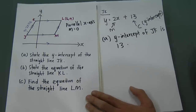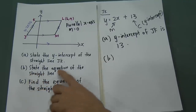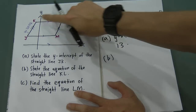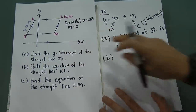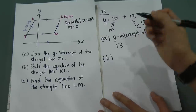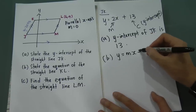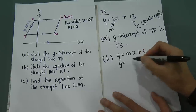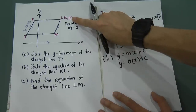Part (b): state the equation of straight line KL. Straight line KL is parallel to JM, and JM is parallel to the x-axis, so the gradient is zero. Using y = mx + c, substituting gradient m = 0 gives y = 0x + c.